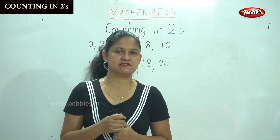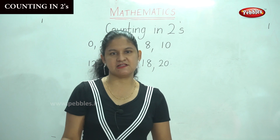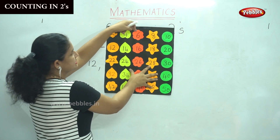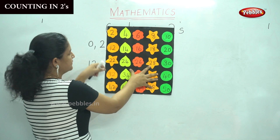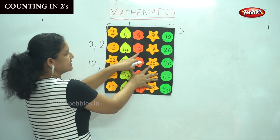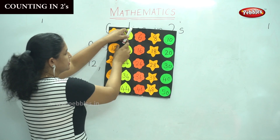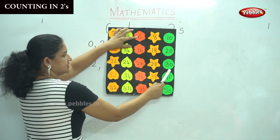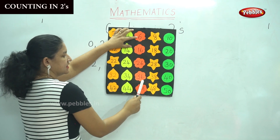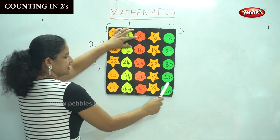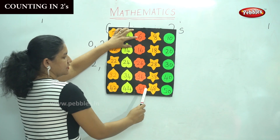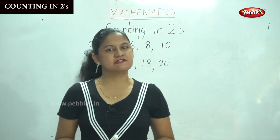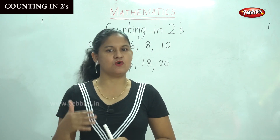So counting in twos is faster, isn't it children? So we have already seen the numbers from 2 to 50: 2, 4, 6, 8, 10, 12, 14, 16, 18, 20, 22, 24, 26, 28, 30, 32, 34, 36, 38, 40, 42, 44, 46, 48, 50. You can move on to numbers till 100 — that is 52, 54, and so on.